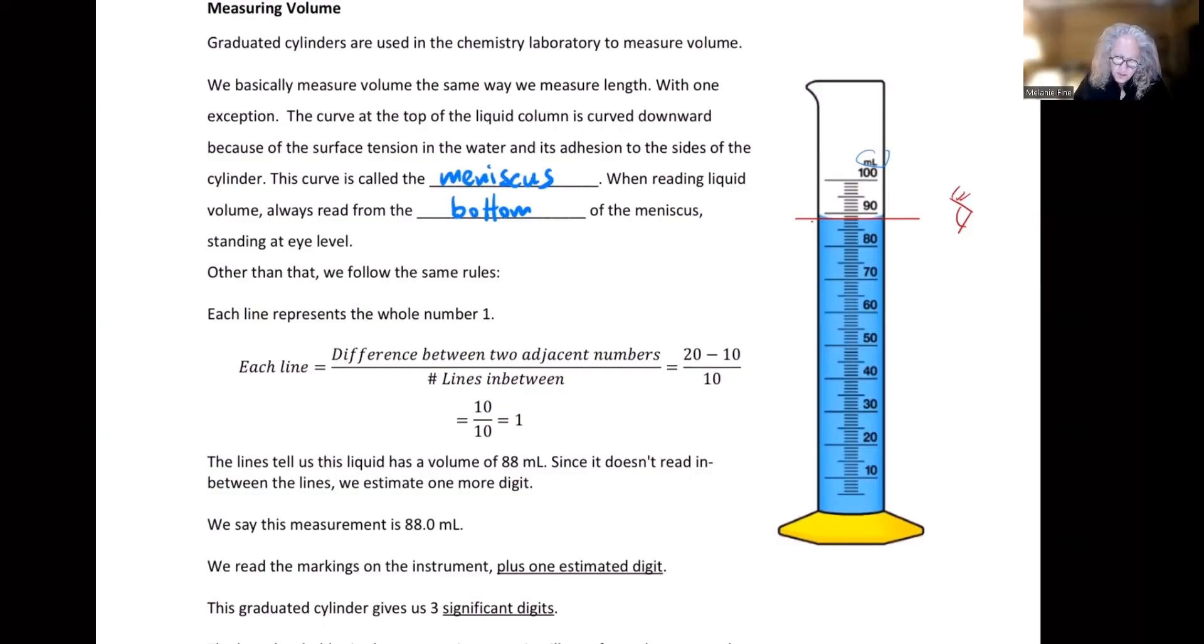Remember, we take the difference between two numbers. Let's say 20 and 10. I want to go back to the thicker line here, 20 and 10. And we divide by the number of lines between: 1, 2, 3, 4, 5, 6, 7, 8, 9, 10. So 20 minus 10 is 10 divided by 10. So each line represents a digit in the ones place.